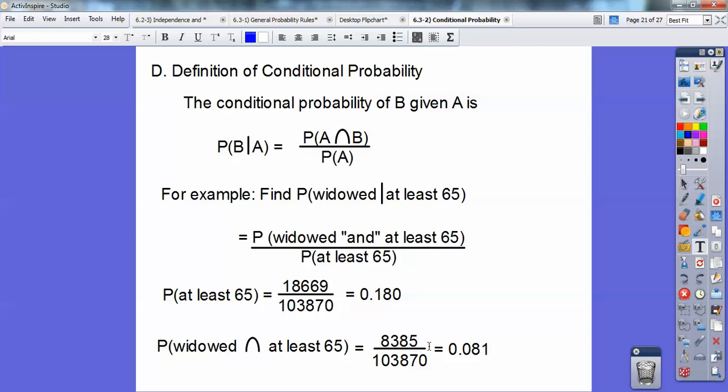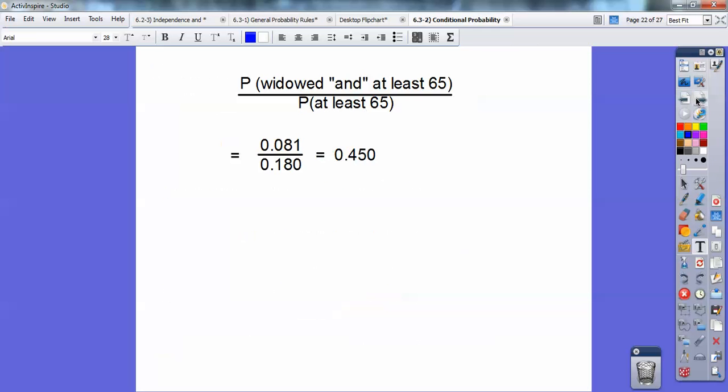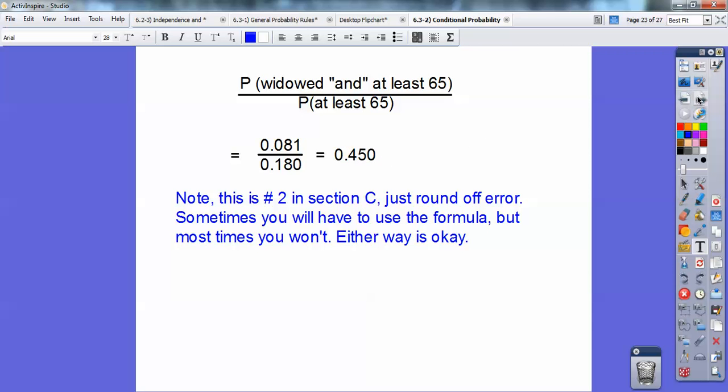You see where those numbers are coming off of that chart? Now we're just going to substitute these two decimals in for this, and watch what happens. You get 0.450. Now, take a look at section C, number 2. It's the same answer that we got, just due to roundoff error. I think it was 0.449, which is 0.450, just due to roundoff error.